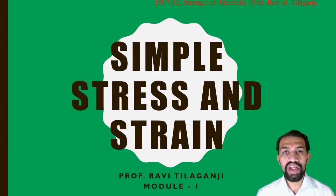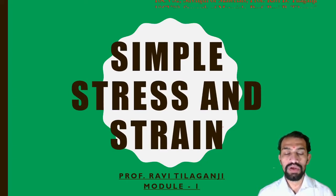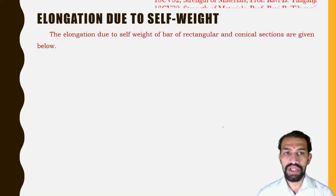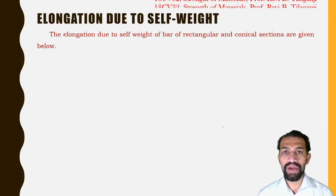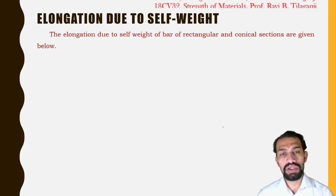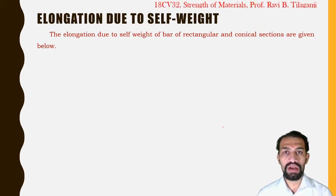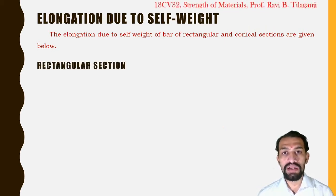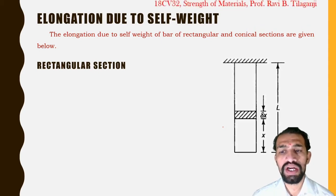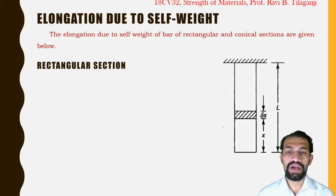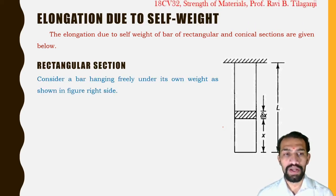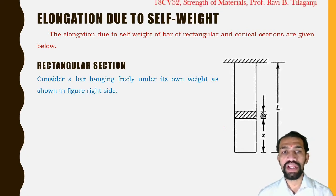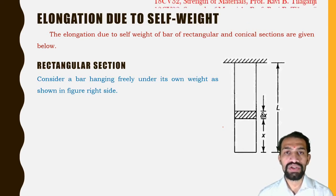Welcome to Strength of Materials: Simple Stress and Strain. In this video, we'll be going further into derivations and numericals. We'll cover elongation due to self weight, specifically for two types of sections: the rectangular section and the conical section. First, we'll take the rectangular section — a bar hanging freely under its own weight.